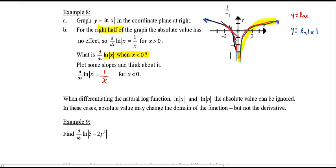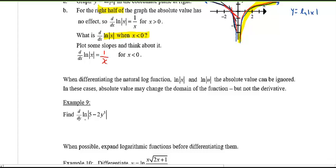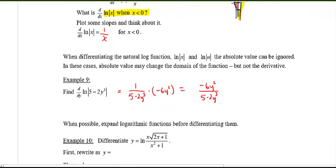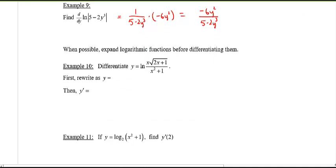For number nine, the derivative is 1 over (5 minus 2y cubed), multiplied by the derivative of the inside, which is negative 6y squared. It's really the same process as before — don't worry about the absolute value sign.